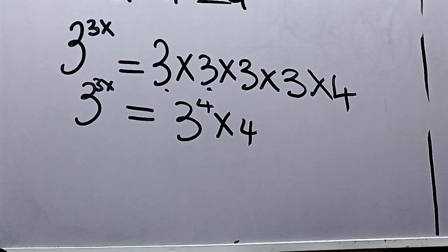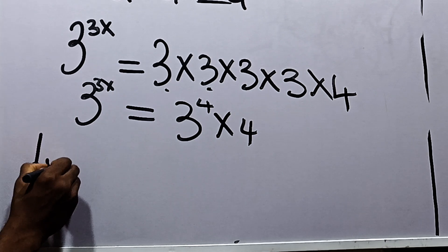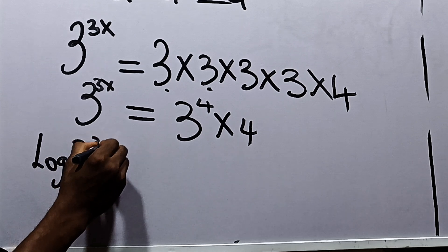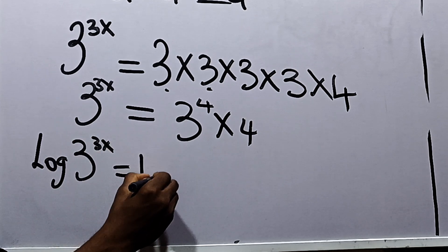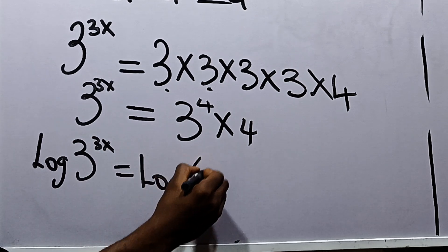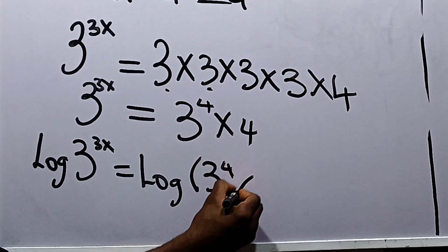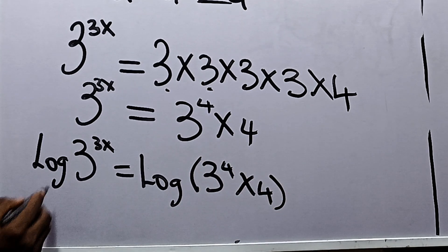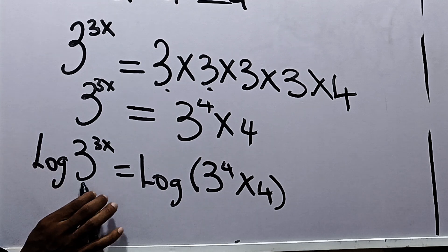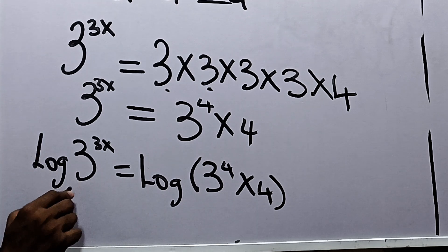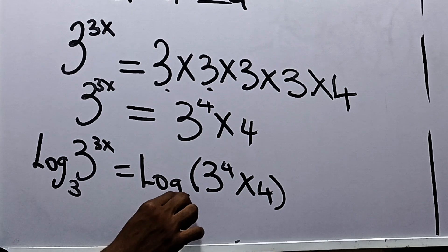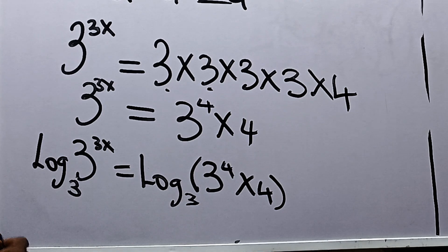At this juncture, let's take the logarithm of both sides. So we can say the logarithm of 3 to the power 3x is equal to the logarithm of 3 raised to the power 4, times 4. We are taking the logarithm in base 3, since the base in our equation is 3. This base 3 on both sides will make our work easy.